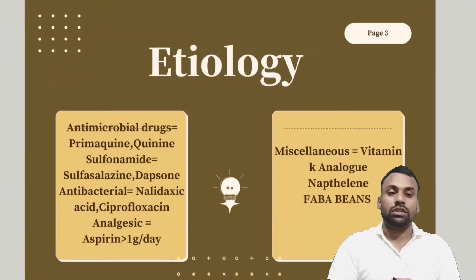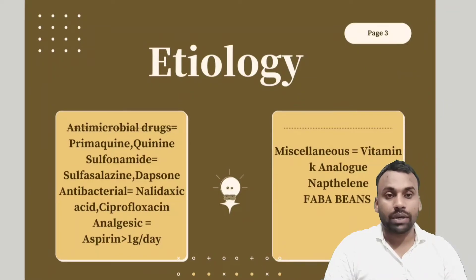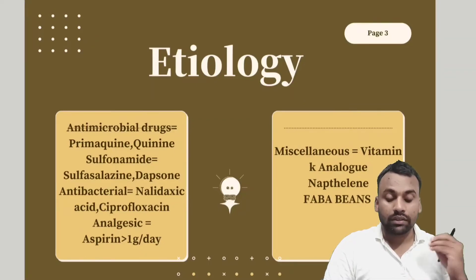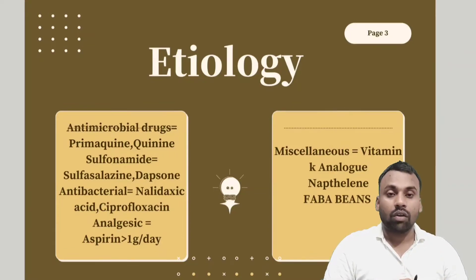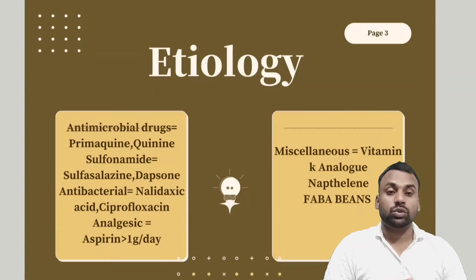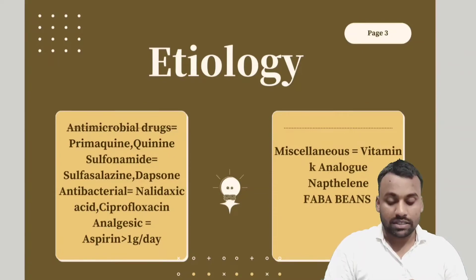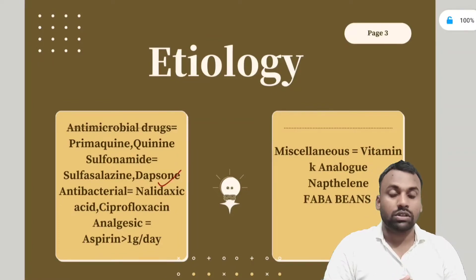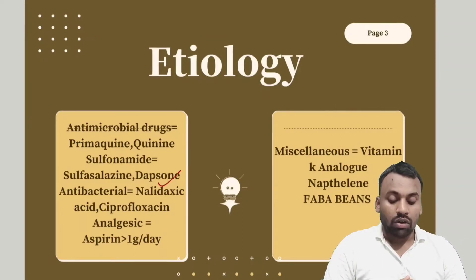Several etiological factors can precipitate hemolysis in this disease. These include antimicrobial drugs like primaquine and quinine, which are mainly used in malaria. The malarial parasite itself can also precipitate this disease. Infections most commonly precipitate acute hemolysis in G6PD deficiency. Sulfonamides like sulfasalazine and dapsone, used in inflammatory diseases, can also trigger it.